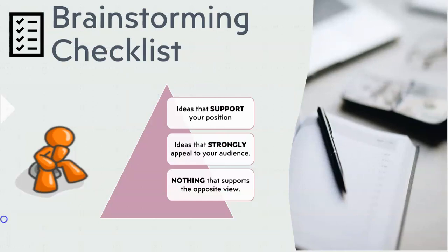With that said, let's move on to a brainstorming checklist. When we do our brainstorming, we're going to write ideas that support your position, ideas that strongly appeal to your audience, and we are going to include nothing that supports the opposite view. When writing an argumentative or persuasive essay, the moment you include something that supports the opposite view, your credibility becomes diminished and your argument becomes weaker.